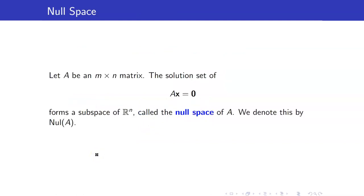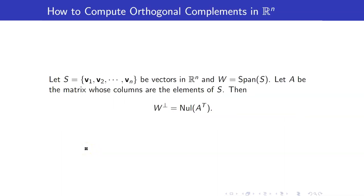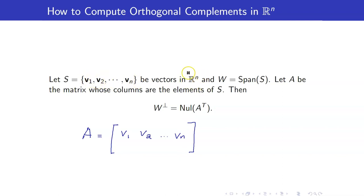To continue, we need to discuss null space. Let A be an m by n matrix. The solution set of Ax = 0 forms a subspace of Rn called the null space of A. Suppose we have a set S of vectors in Rn and let w = span(S). Let A be the matrix whose columns are the elements of S — so A = [v1, v2, ..., vn]. To get the orthogonal complement of span(S), it equals the null space of A-transpose.